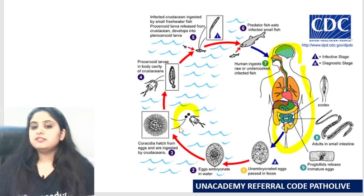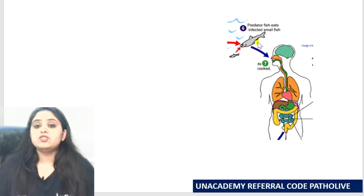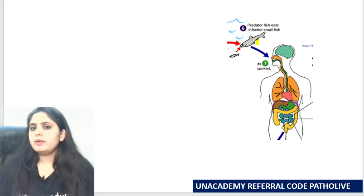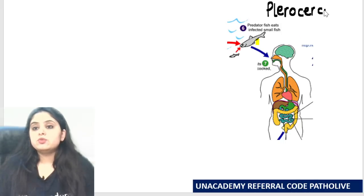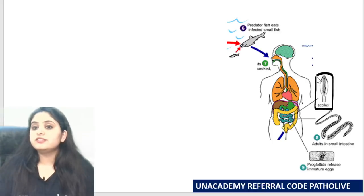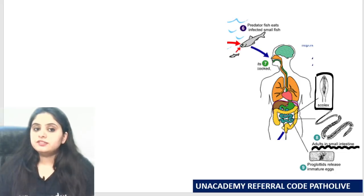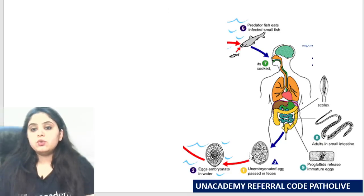In the life cycle, we have man, Cyclops, and fish. Man gets the infection by ingesting undercooked fish containing the plerosercoid larva. The adult worm develops in the small intestine and releases unembryonated eggs in the feces. These eggs embryonate in water, and the first larval stage — coracidium — hatches out. The coracidium is then ingested by the first intermediate host, Cyclops.